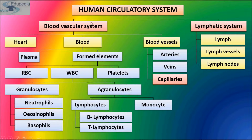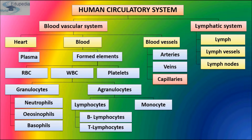The blood vascular system has three components: heart, blood, and blood vessels. Blood has two parts — plasma and the formed elements. Blood vessels include arteries, veins, and capillaries. Formed elements are of three types: WBC, RBC, and platelets. WBC is further divided into granulocytes and agranulocytes.